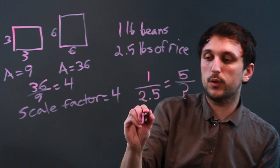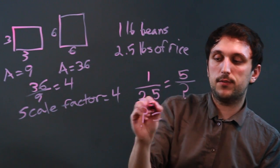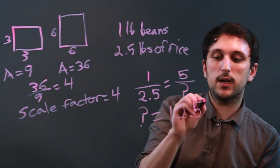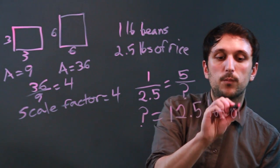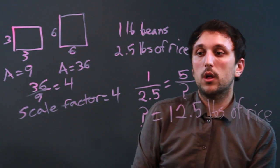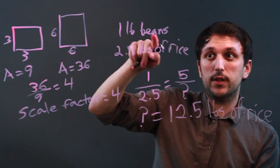We then cross multiply, so x equals 5 times 2.5, which is 12.5 pounds of rice. So these are proportional, and they're different.